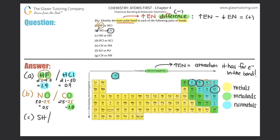For part c, SH versus OH. Hydrogen is the same for both at 2.1. Oxygen is 3.5 and sulfur is 2.5. For SH: 2.5 minus 2.1 gives an electronegativity difference of 0.4. For OH: 3.5 minus 2.1 gives 1.4. Since OH has a higher electronegativity difference, OH is the more polar bond — that's the answer for c.